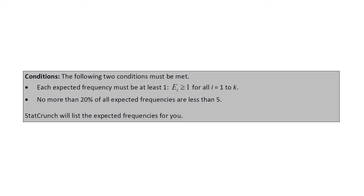The following two conditions must be met. First, each expected frequency must be at least one. And no more than 20% of the expected frequencies can be less than five. The easy way to check: if all the expected frequencies are greater than five, you're good to go. If some are less than five, make sure they're all at least one and no more than 20% of them are under five.